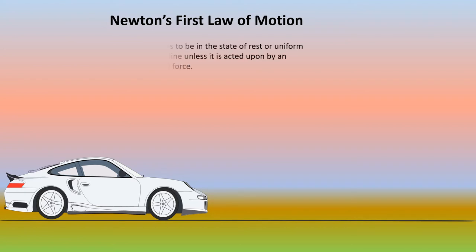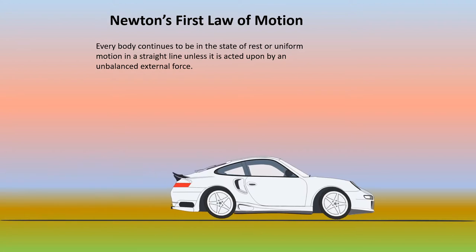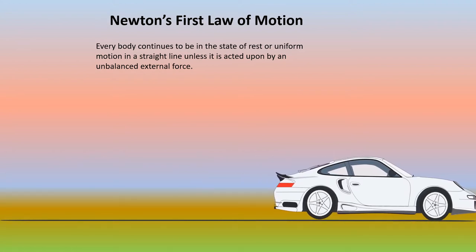Newton's first law of motion states that everybody continues to be in the state of rest or uniform motion in a straight line unless it is acted upon by an unbalanced external force. We have a car over here, and the car moves only when an unbalanced external force is applied on it.